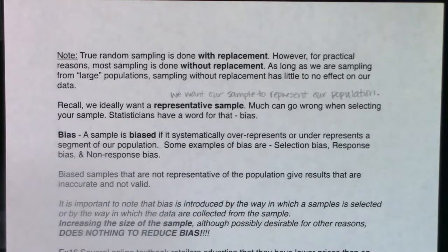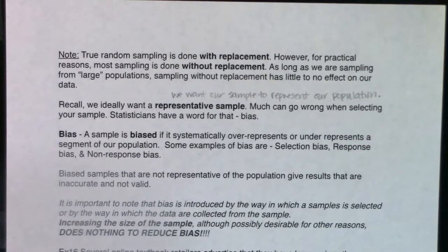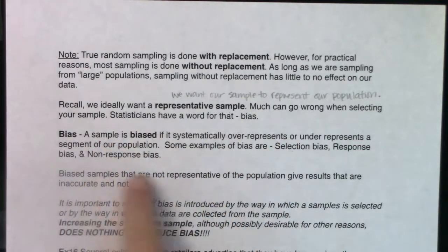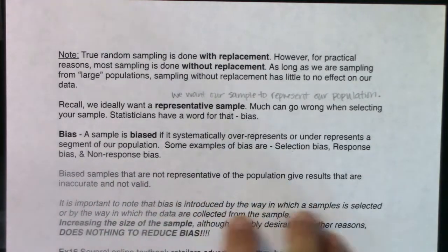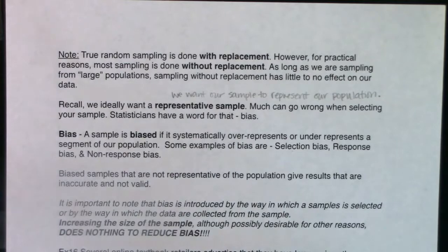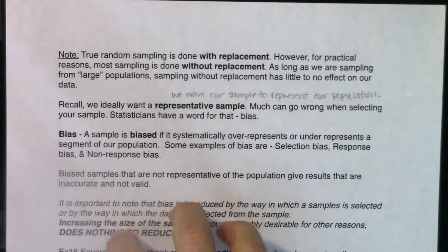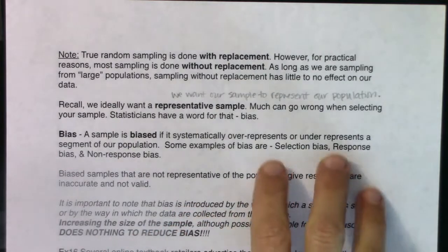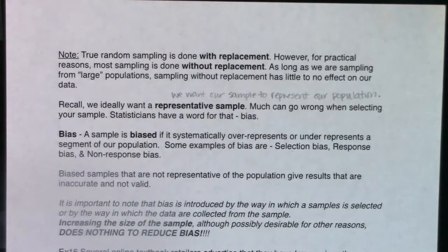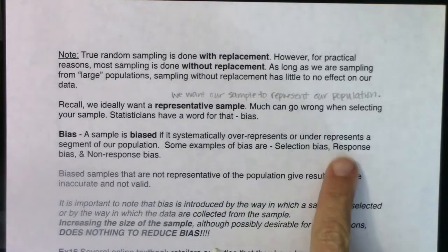If you saw a survey where one question said, 'Stupid people like the color blue — what is your favorite color?' you're going to get a lot fewer responses saying blue, even though that might be their favorite color. That's an over-exaggerated example, but it does happen. You might be asked something personal or embarrassing and not want to answer it, leading to bad data.